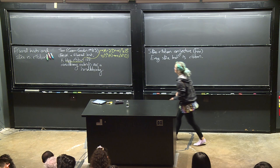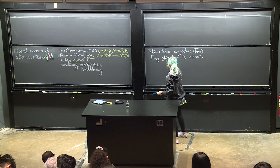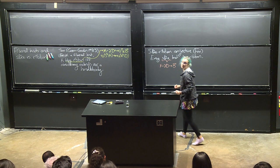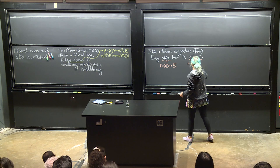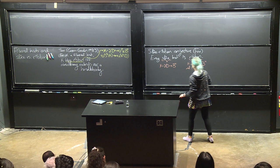So remember: slice means that our knot K just bounds any disk in the actual four-ball, smoothly embedded. And ribbon means that K is the boundary of a disk smoothly embedded in the actual four-ball, and when we look at the radial height on the four-ball, it restricts to the disk with no local maxima.